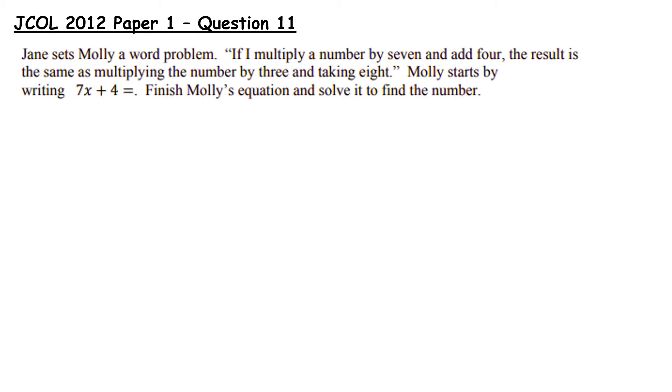This is a junior certificate ordinary level question from the 2012 paper 1. Jane sets Molly a word problem. If I multiply a number by 7 and add 4 the result is the same as multiplying the number by 3 and taking 8. Molly starts by writing 7x plus 4 equals. Finish Molly's equation and solve it for the number.